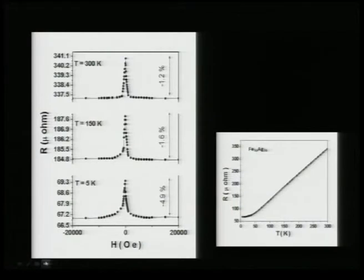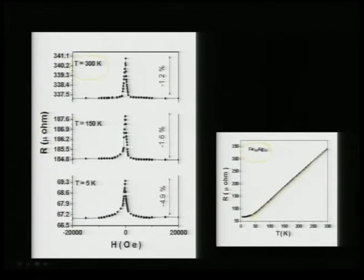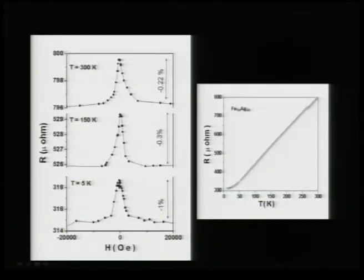We can also do this with iron-silver alloy composites, which again show clear metallic behavior down to 4 K. With increasing temperature the resistance increases, and MR shows a very clear feature. Although the MR percentage is significantly low, it shows a higher proportion at 5 K compared to 300 K. An iron-silver 50-50 alloy also shows a similar trend with lesser MR percentage at room temperature compared to 5 K.